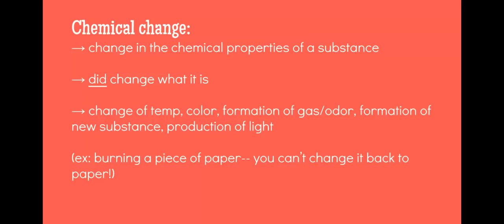Chemical change is different. It's the opposite. It's a change in the chemical properties of a substance, and it did change what it is. It's a new substance. Other pieces of evidence that you could use to determine if something is a chemical change would be a change in temperature, an unexpected change in temperature, an unexpected change in color, a formation of a gas or an odor. You could see it as the form of bubbles, too. Formation of a new substance or a production of light. For example, if you burn a piece of paper, you can't change it back to the paper. It's ash. It's something totally different with new chemical properties.